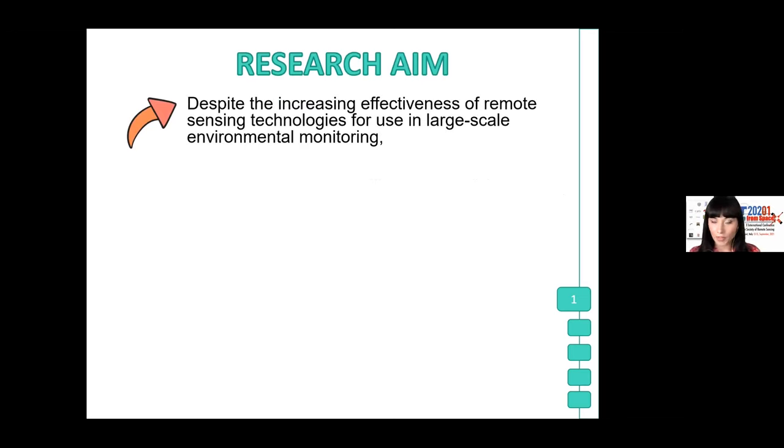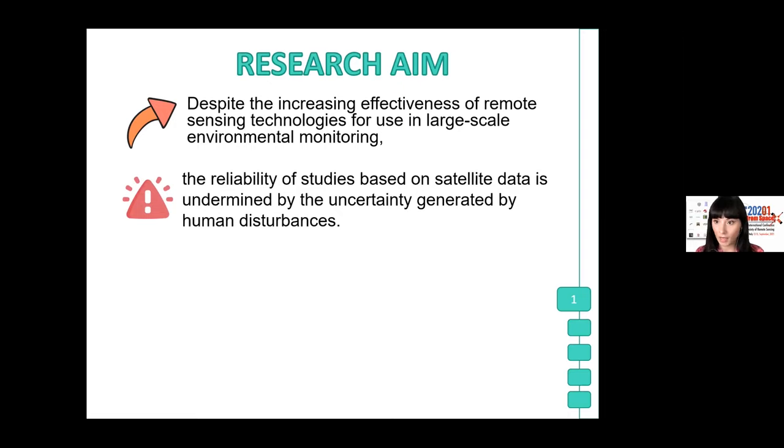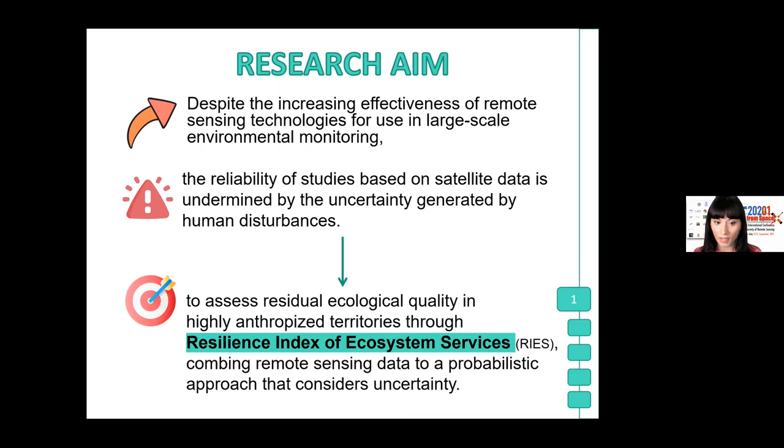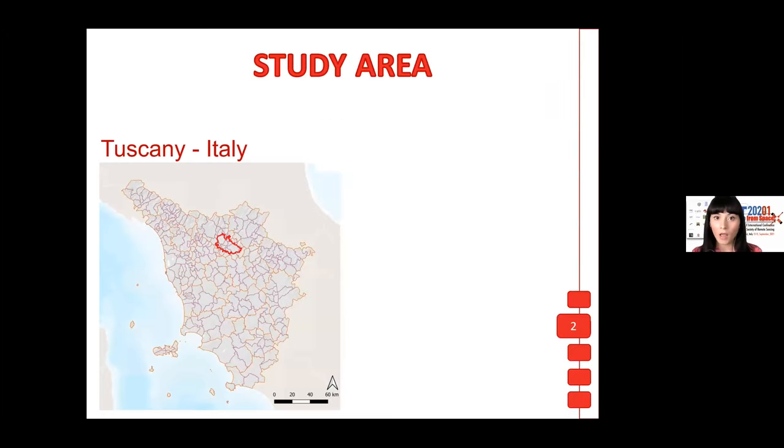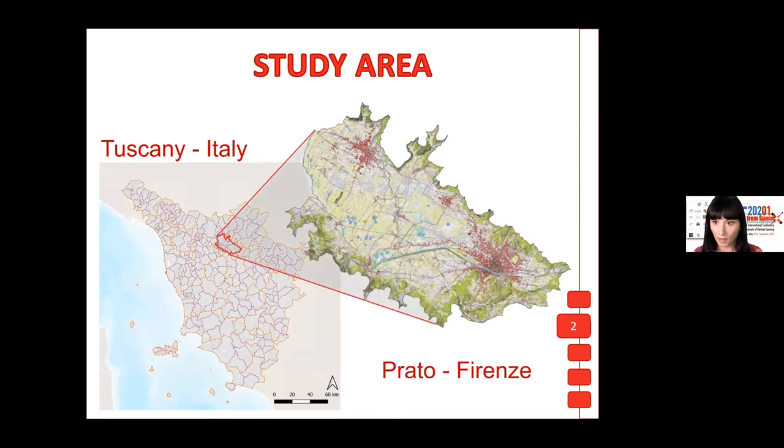However, despite the increasing effectiveness of remote sensing technologies for use in large-scale environmental monitoring, the reliability of studies based on satellite data is undermined by the uncertainty generated by human disturbance. For this reason, our research aimed to assess residual ecological quality in highly anthropomorphized territories through a resilience index of ecosystem services, combining the remote sensing data to a probabilistic approach that considers uncertainty. The study area is the urbanized plain of Florence and Prato city in the central part of the Tuscan region.